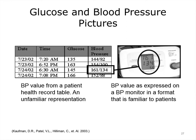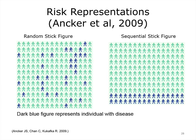The representational effect has significant design implications. Jessica Anker has conducted research pertaining to communicating risks to patients. For example, if you're 50 years old and smoke, what is your risk of having a heart attack over the next 10 years, and how does that differ from someone of the same age who does not smoke? In the first graphic, dark blue stick figures representing individuals with disease are randomly dispersed throughout a population. In the second graph on the right, the dark blue stick figures are sequentially presented at the bottom of the screen. Although they represent the same probability, people are likely to interpret them differently. Dr. Anker has experimented with different kinds of dynamic and static representations to determine which ones work best for different populations.